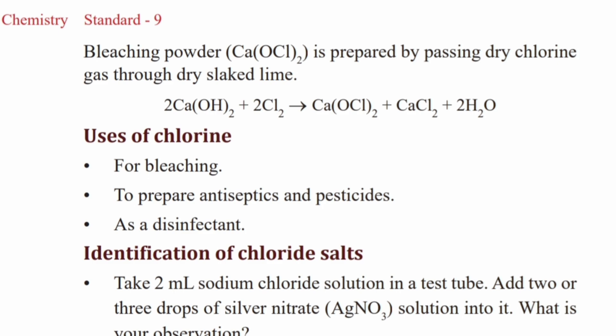The chemical equation is: 2Ca(OH)2 plus 2Cl2 gives CaOCl2 plus 2H2O. Calcium hydroxide and chlorine combine to form bleaching powder, calcium hypochlorite, and water. Bleaching powder is used for bleaching, as an antiseptic, and as a disinfectant and pesticide.